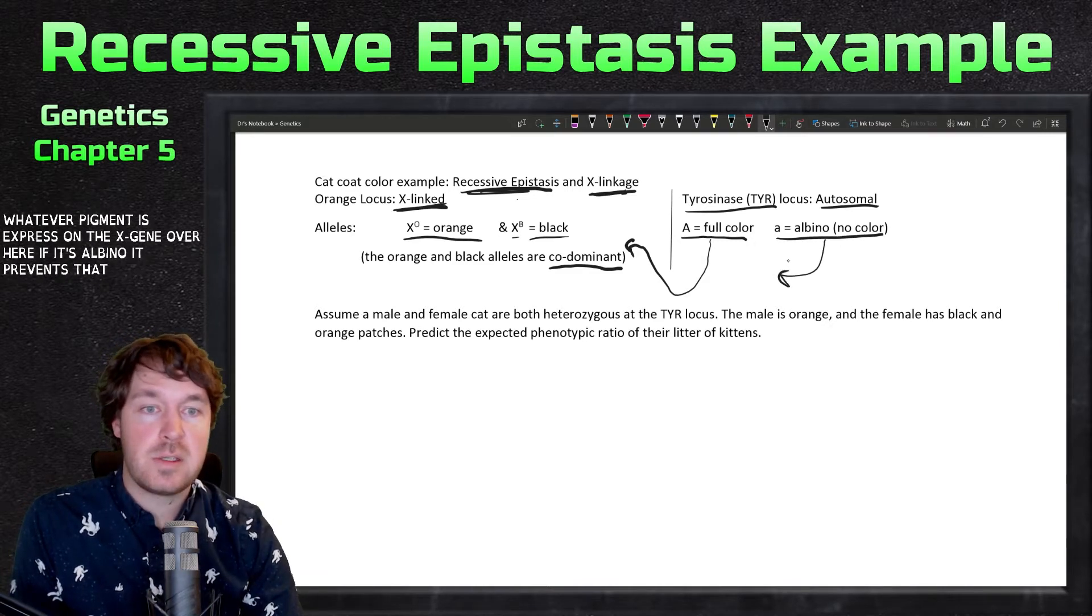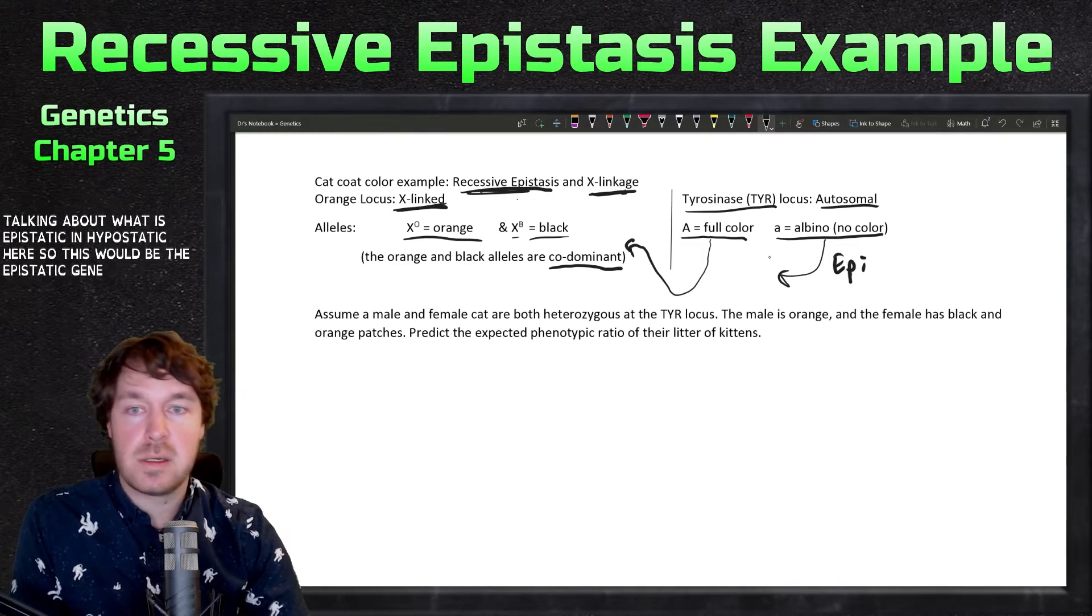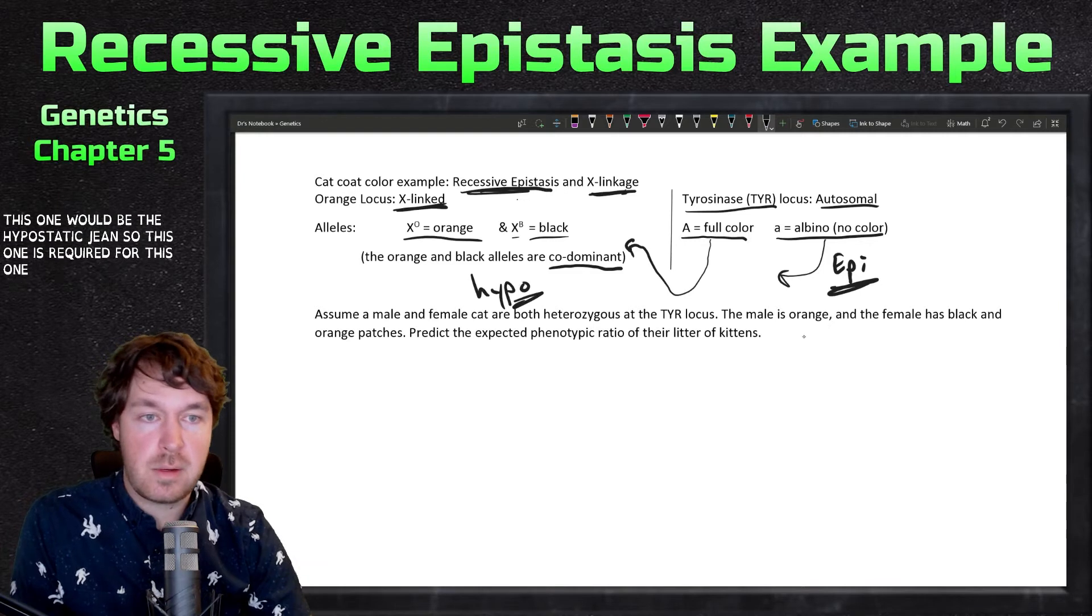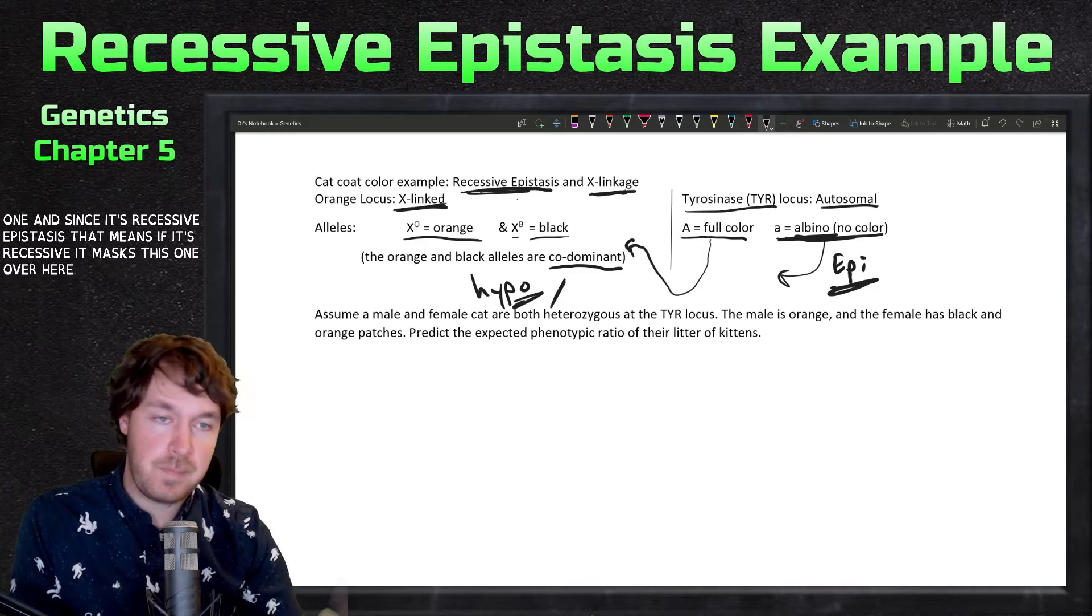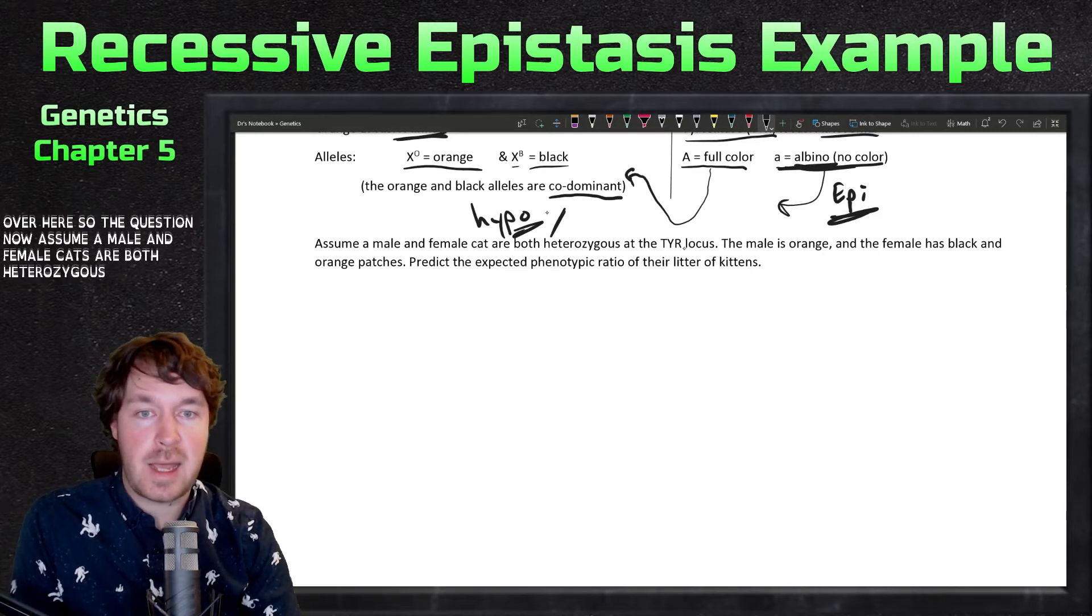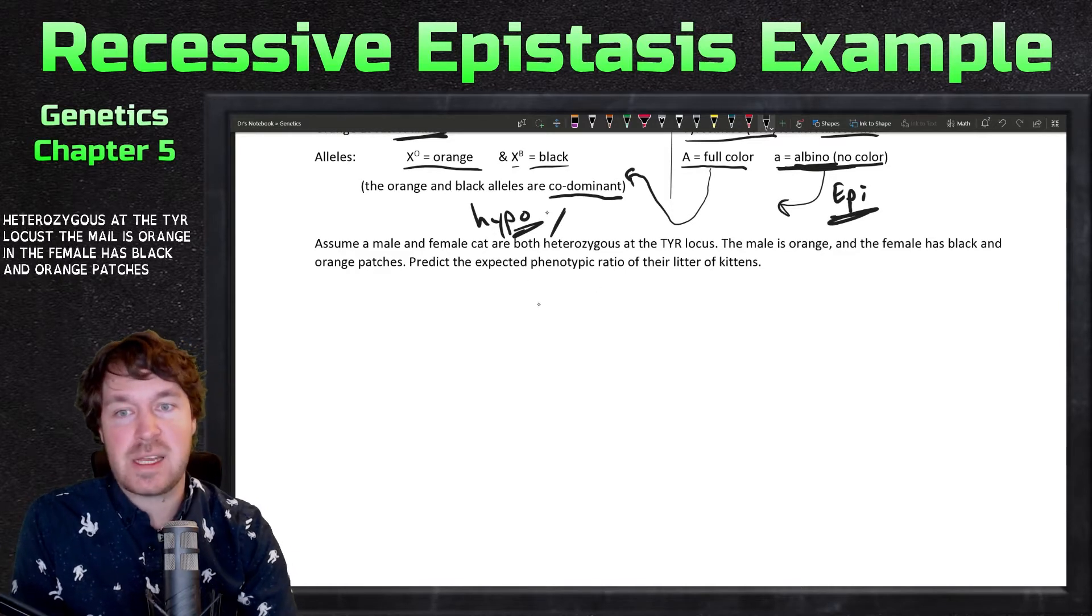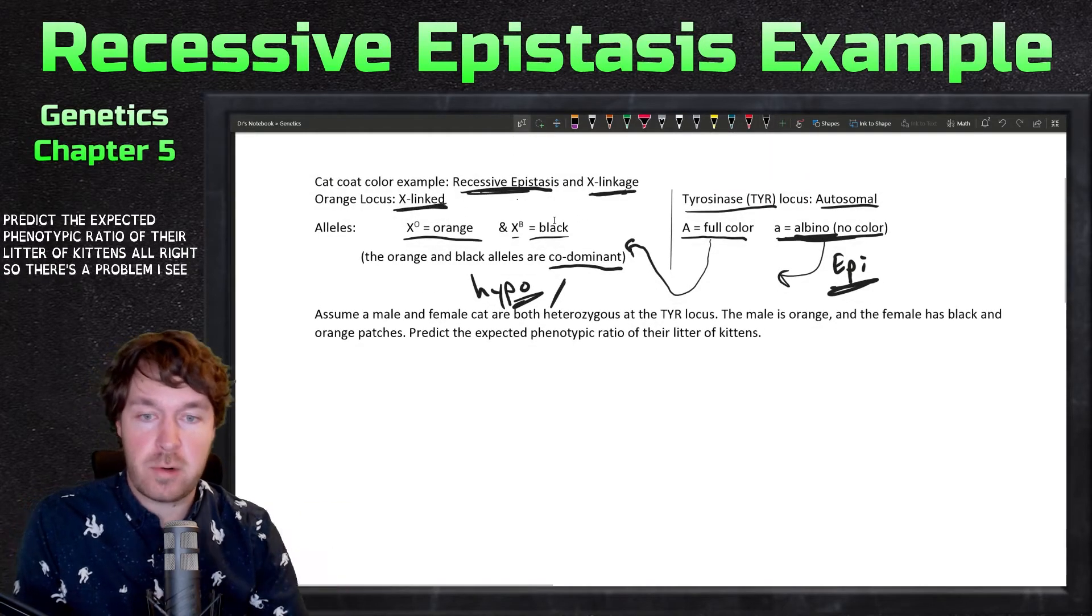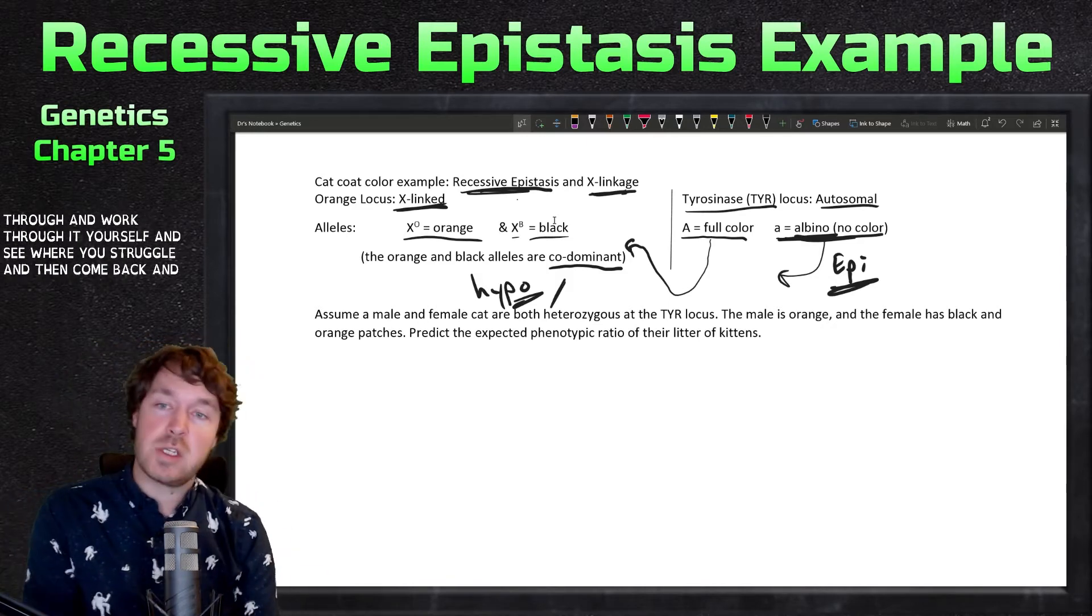If it's albino, it prevents that. If we're talking about what is epistatic and hypostatic here, this would be the epistatic gene and this one would be the hypostatic gene. This one is required for this one, and since it's recessive epistasis, if it's recessive it masks this one over here. The question: assume a male and female cat are both heterozygous at the tyr locus. The male is orange and the female has black and orange patches. Predict the expected phenotypic ratio of their litter of kittens.